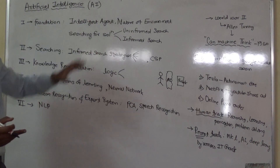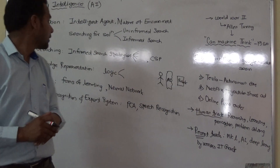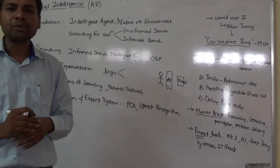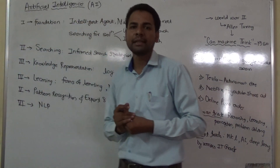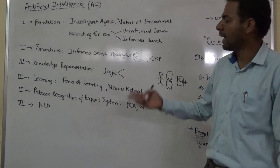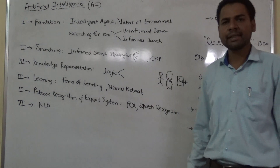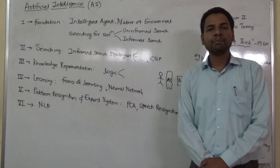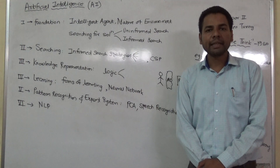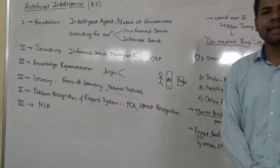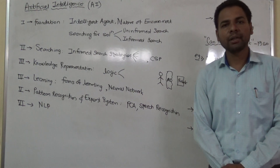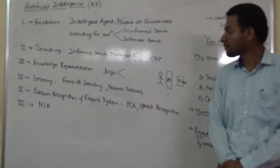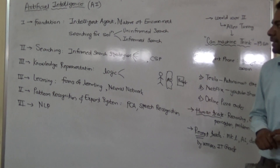This total theory is called AI theory. Now if we observe the syllabus of this AI subject, we will find there are six units as usual. The exam pattern consists of 30 marks for in-semester examination and 70 marks for end-semester examination as per university norms.